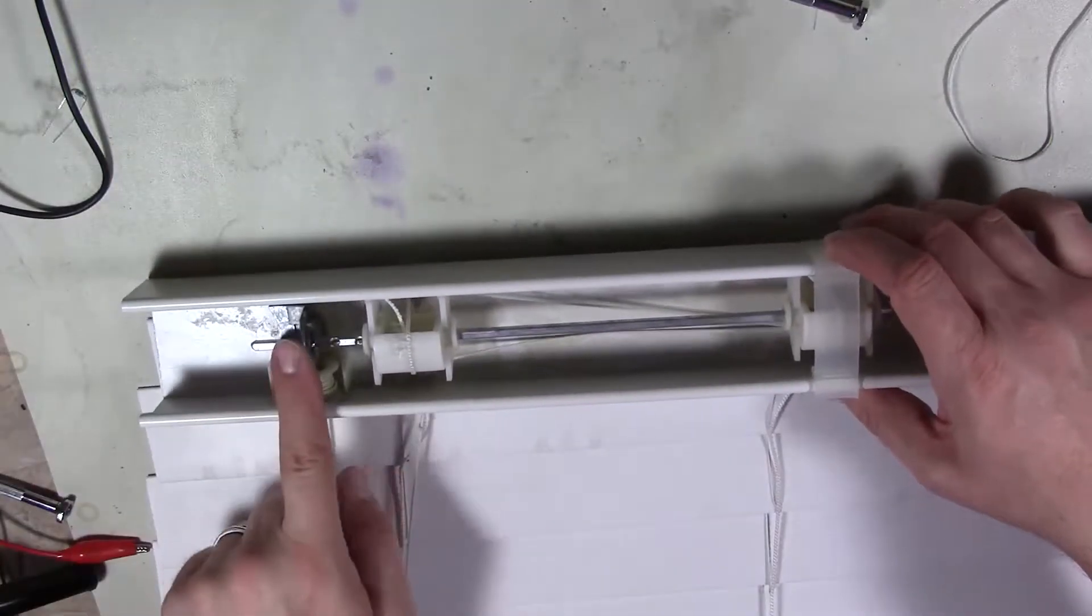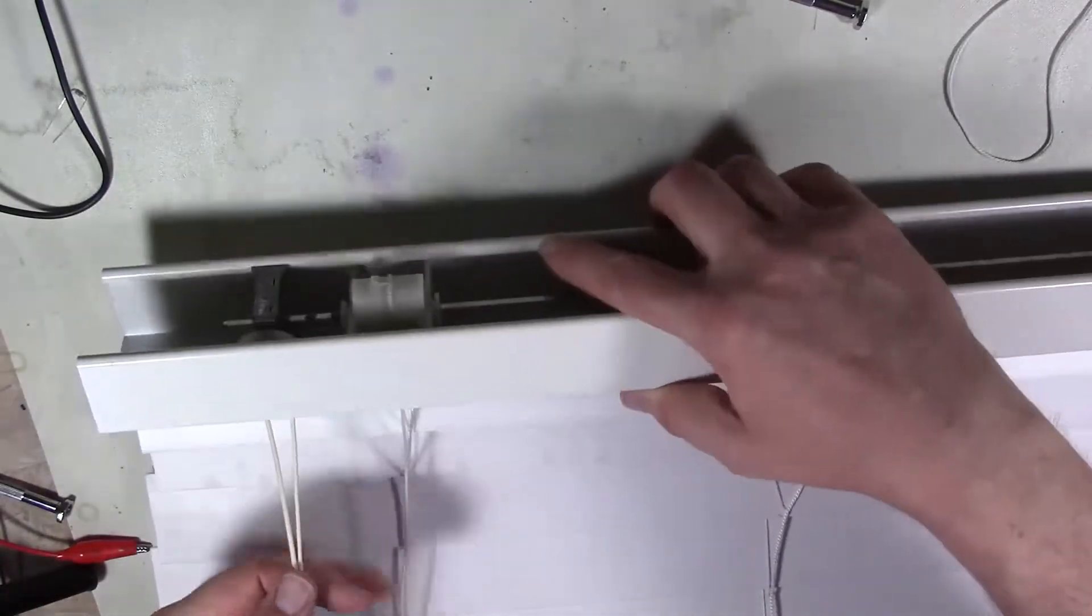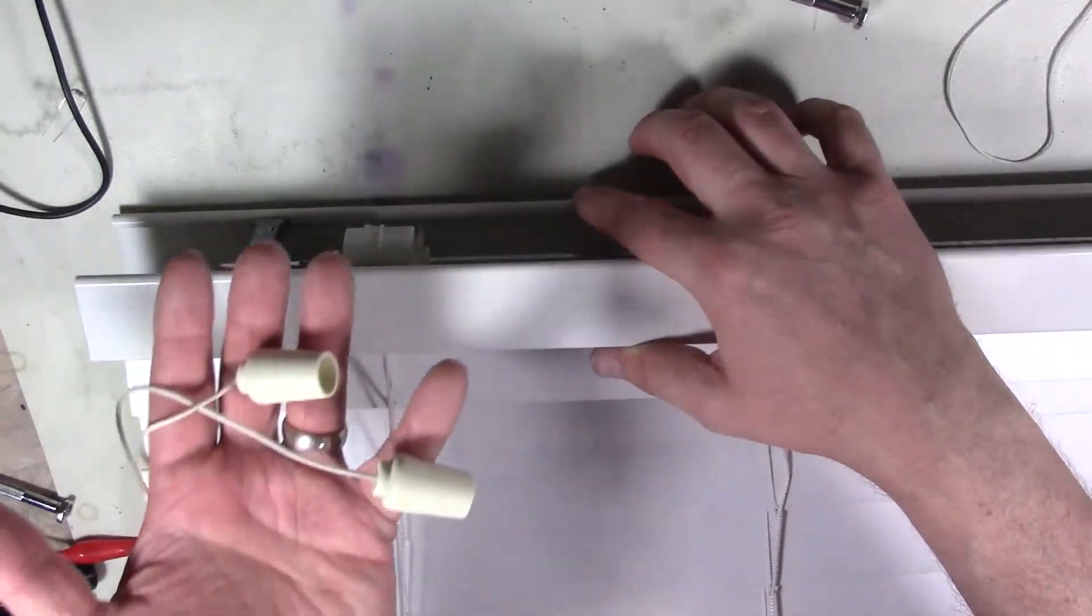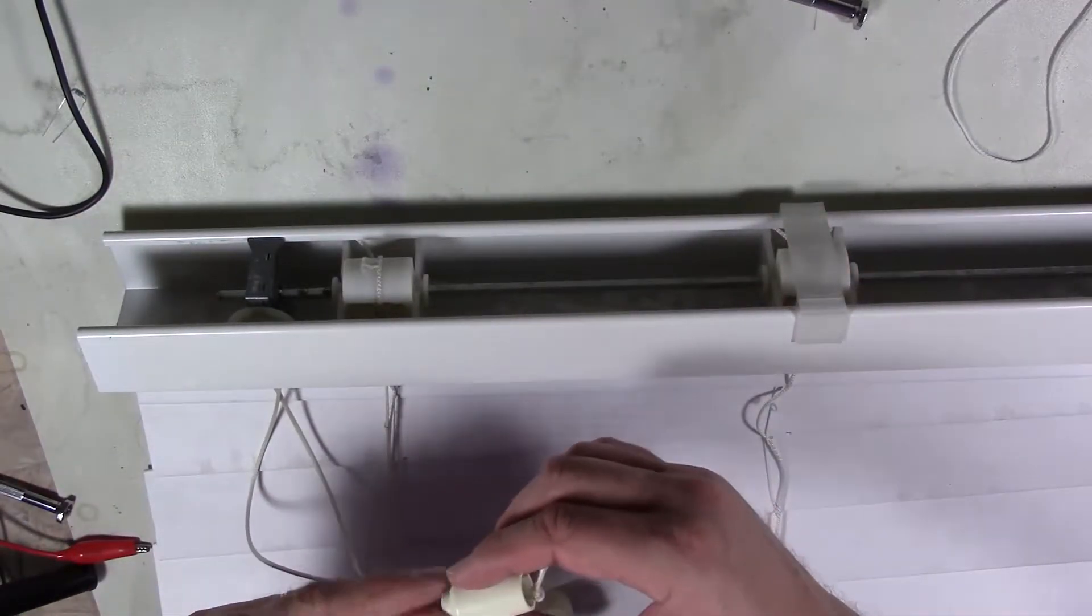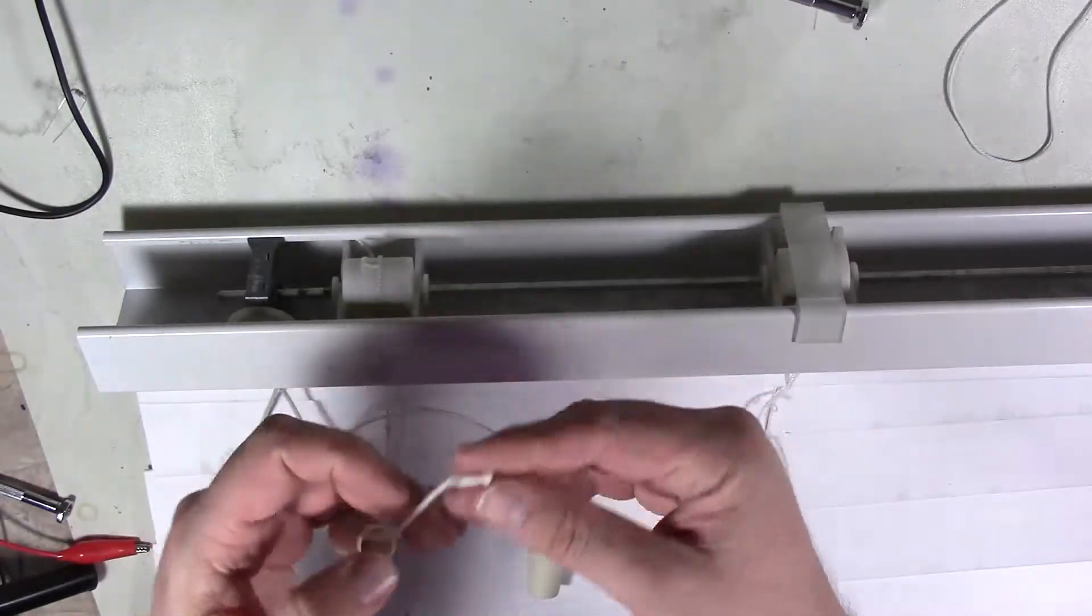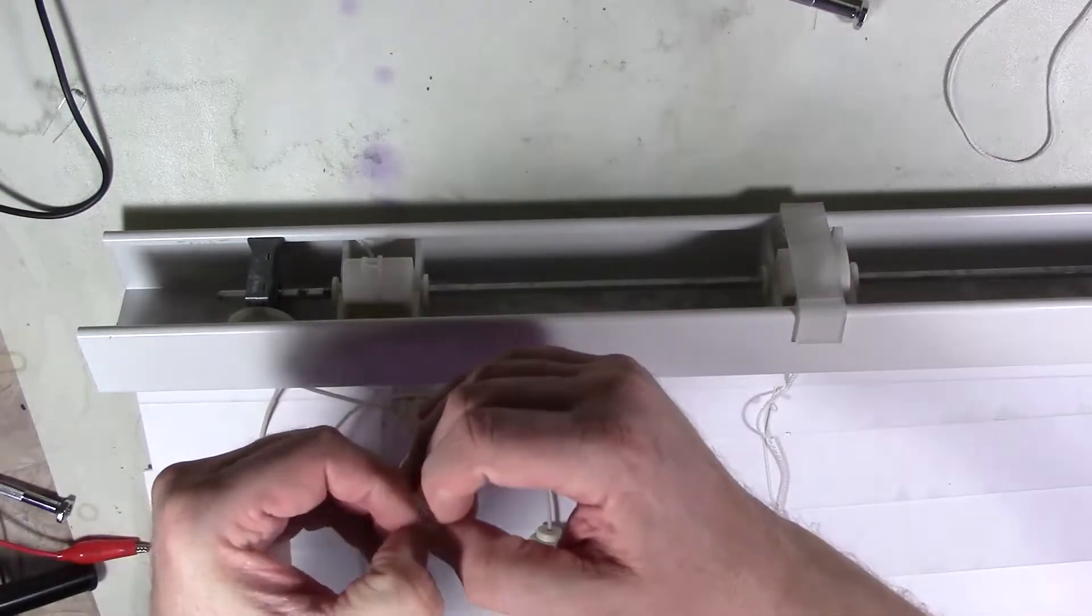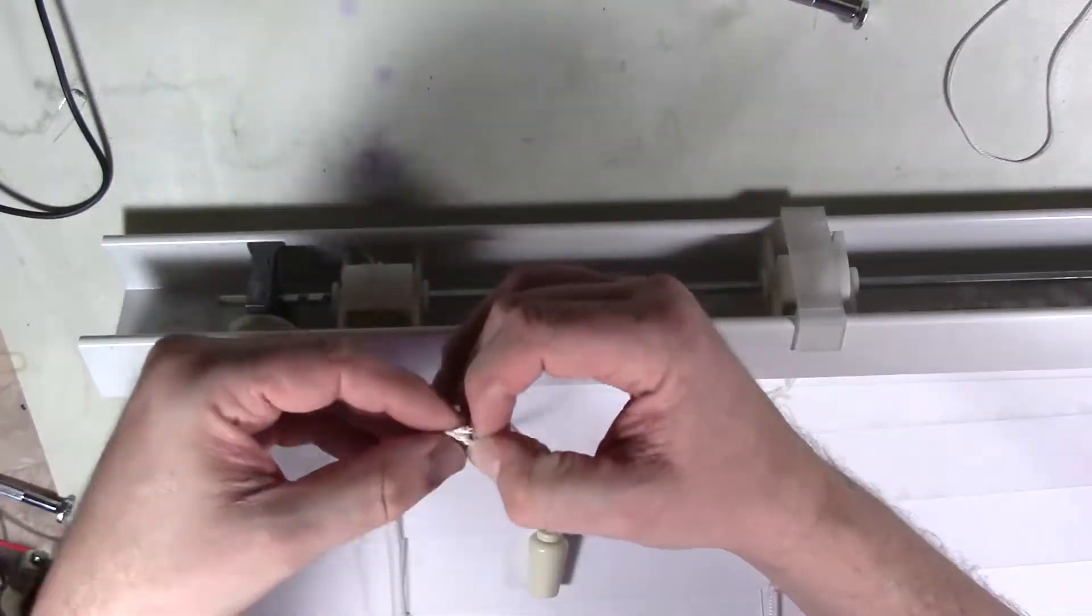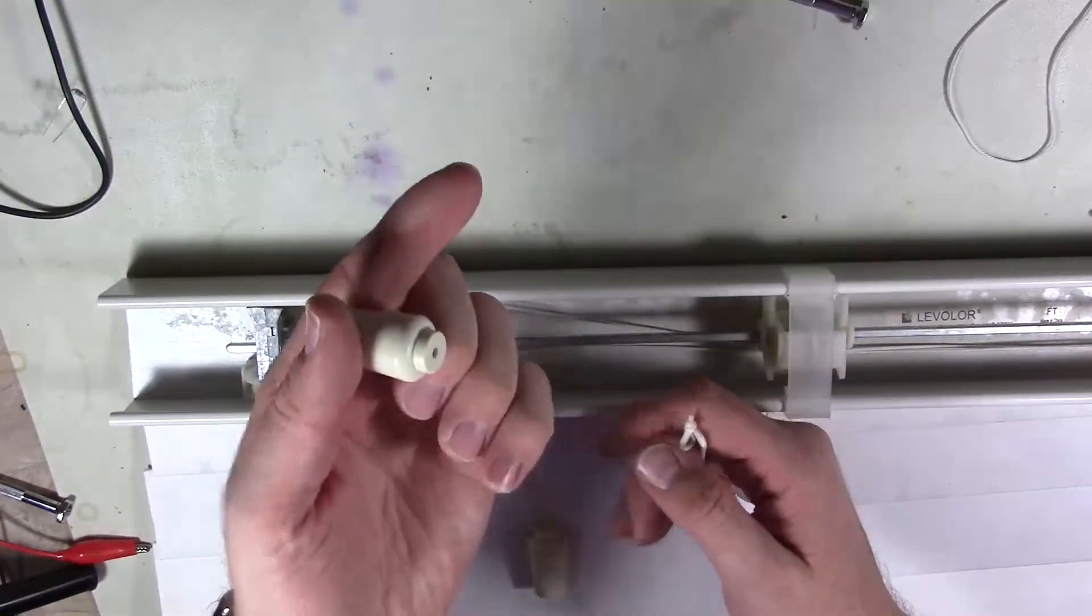Okay, to start this off, we need to go ahead and disassemble our blinds. We need to remove the standard pole chain that allows it to open and shut the blinds. So in order to do that, we'll just simply unknot the little strings that go through the little tassel holders. And once we get that undone, these should slide right off and then we should be able to remove the mechanism.